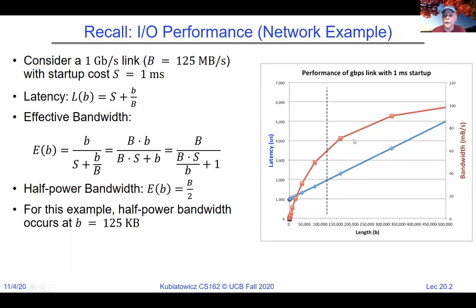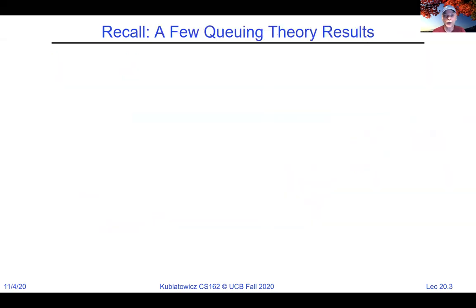When we look at our file systems, we're going to want to keep effective bandwidth as close to the real bandwidth as possible, which means keeping overhead low.